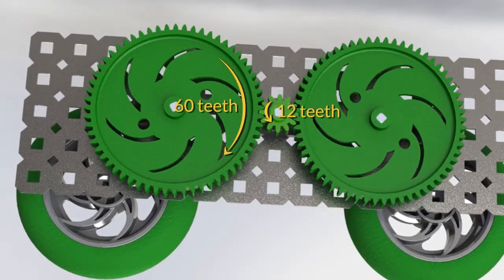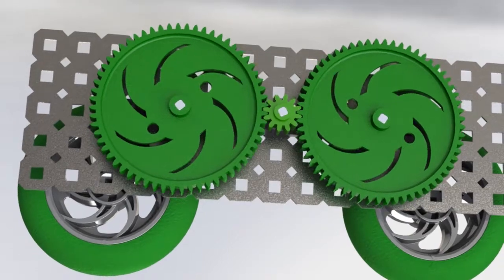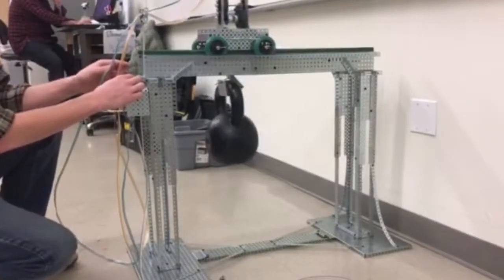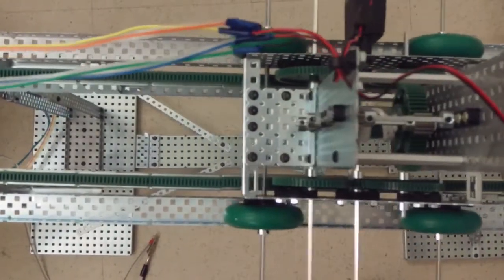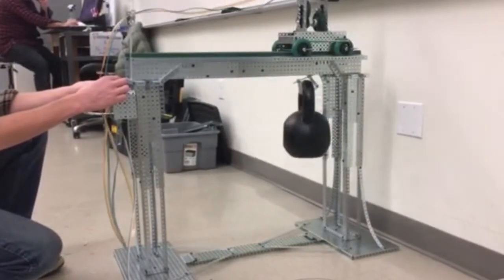For our rack and pinion, we have a five to one gear ratio, bringing our motors down to a controllable speed and making sure it can move with the weight attached. We added the wheels on the side and the previously mentioned tracks to take most of the weight off the gears and prevent them from seizing.